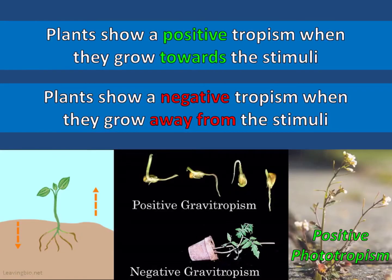Plants show a positive tropism when they grow towards the stimuli. Plants show a negative tropism when they grow away from the stimuli.